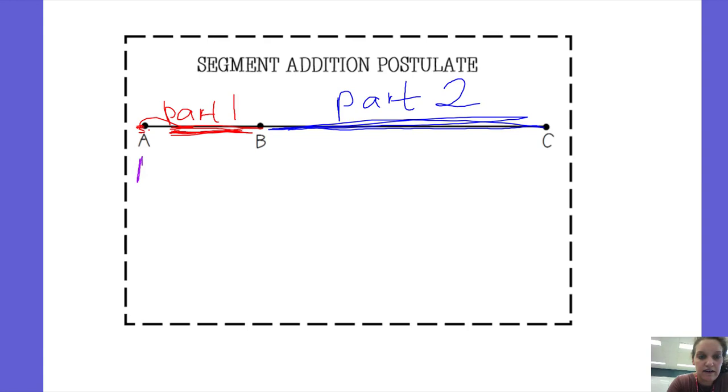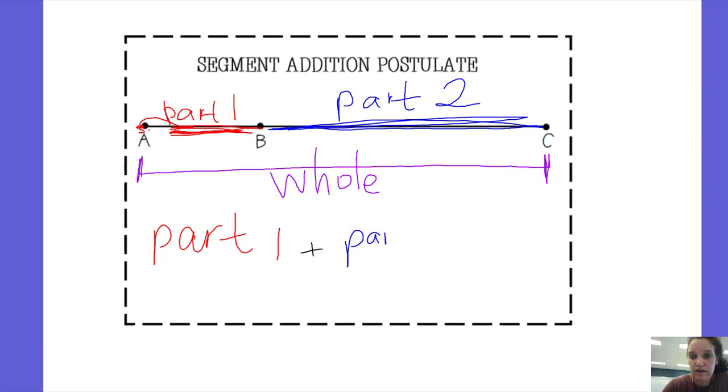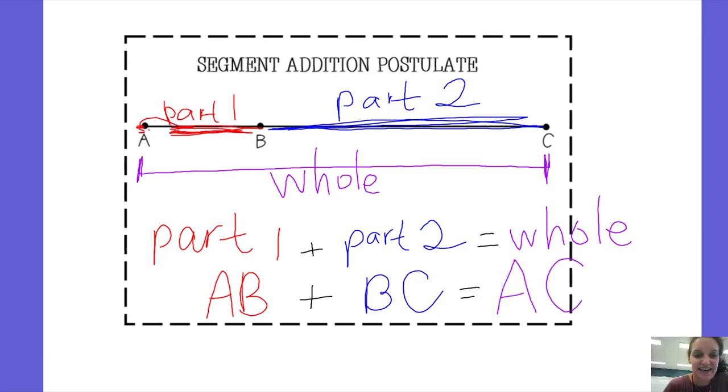And then together if I add those two parts together that gives me the whole enchilada. So I can do part one plus part two equals the whole thing, or if I'm going to use the segments, segment AB plus segment BC. Part plus part equals whole. That is the Segment Addition Postulate.